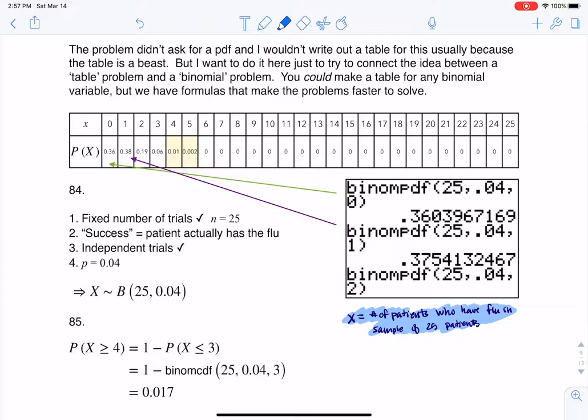Now, number 85 specifically says find the probability that at least 4 of the 25 patients actually have the flu. So I'm going to write this out here. I want to write the words probability—oops, that's not even how you spell probability. We're going to pretend I know how to spell my own word. Okay, probability, at least 4 have the flu. So I want to break this down. At least 4 have the flu.